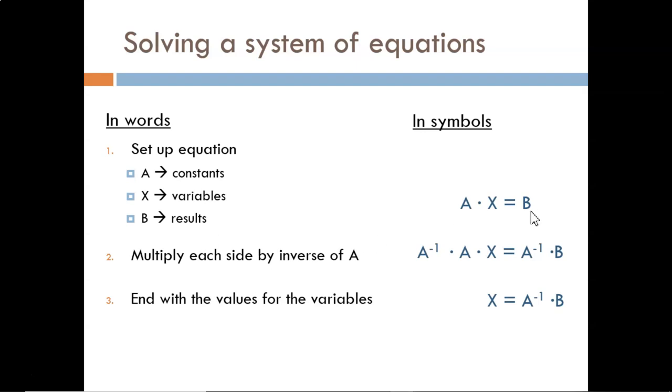From here we need to isolate X. If these were scalars, we could simply divide both sides by A. But we need to be a little more formal when dealing with matrices. The allowed step is to multiply both sides by the inverse of A, as shown here. Note that this inverse of A comes first on both sides of the equation. This is because matrix multiplication is not commutative, meaning that Q times R is not the same as R times Q.